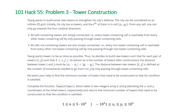He decides to build new towers such that for each pair of towers i and j, where i and j are between 1 and m inclusive (m being the number of towers after construction), the distance between tower i and j — defined as the number of movements needed to go from i to j passing only through tower-containing cells — must equal the sum of the absolute difference in x coordinates and the absolute difference in y coordinates. He wants your help to find the minimum number of towers that need to be constructed. Complete the function fewest_towers, which takes two integer arrays x and y denoting the coordinates of the initial towers and returns the minimum number of towers needed.